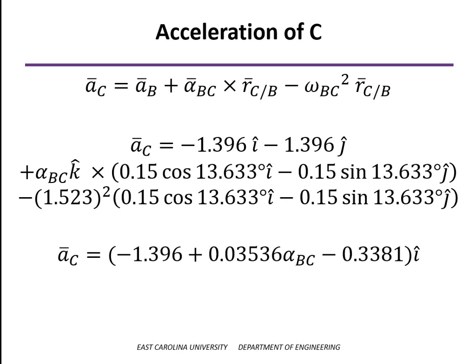If we work these terms out in the I direction, first of all, we have the term minus 1.396 that comes from the acceleration of B. The next term comes from doing the cross product, where we have k cross j is minus I, but there's already a minus sign there, so those cancel out and leave us with a positive value times alpha BC. And then the third term is minus omega squared times the I component, and that gives you the 0.3381 in the negative x direction. So those are the I components.